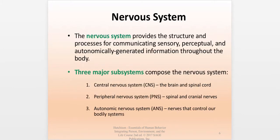Now looking at the broader nervous system — this book begins each section with the disorder and then goes into description of the system. The nervous system provides the structure and processes for communicating sensory, perceptual, and autonomically generated information throughout the body. There are three major subsystems: the central nervous system (brain and spinal cord), the peripheral nervous system (spinal and cranial nerves), and the autonomic nervous system (nerves that control basic body functions).